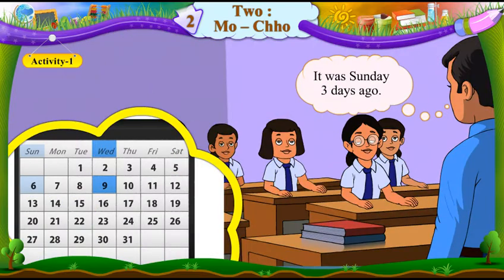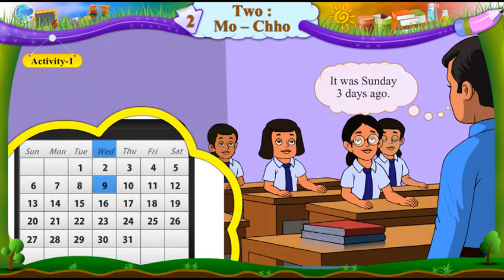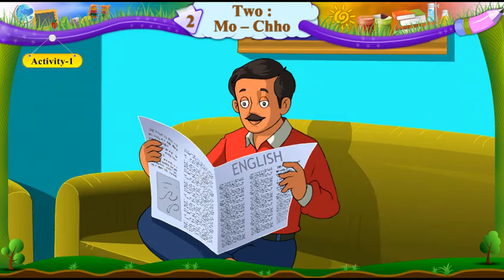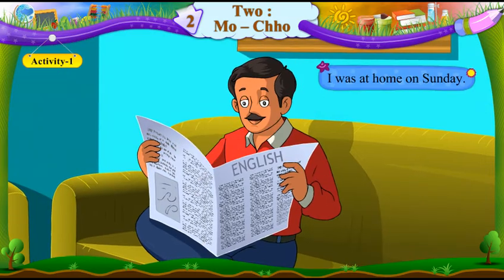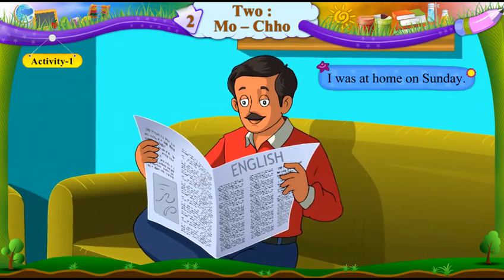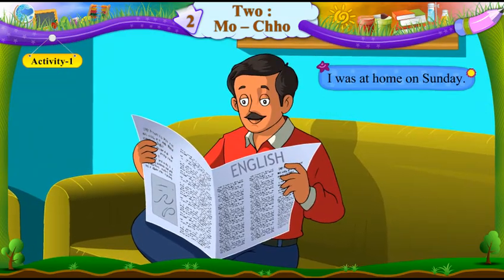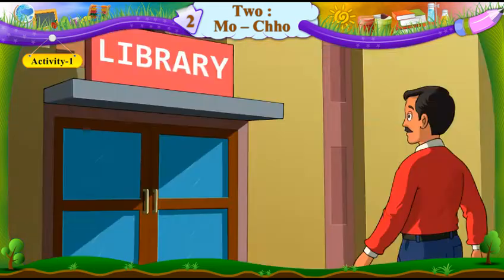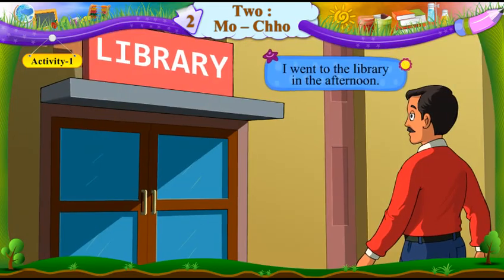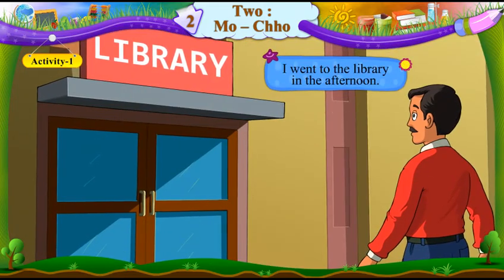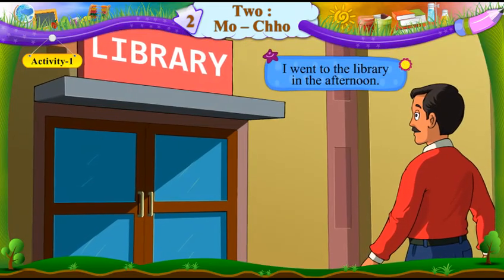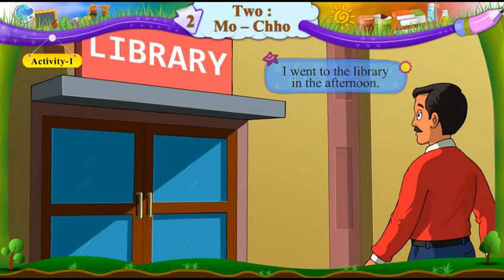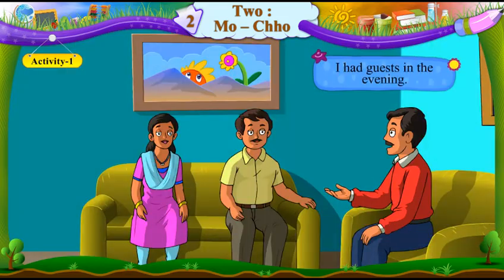It was Sunday three days ago. I was at home on Sunday. I had no notebooks. I went to the library in the afternoon. I had guests in the evening.